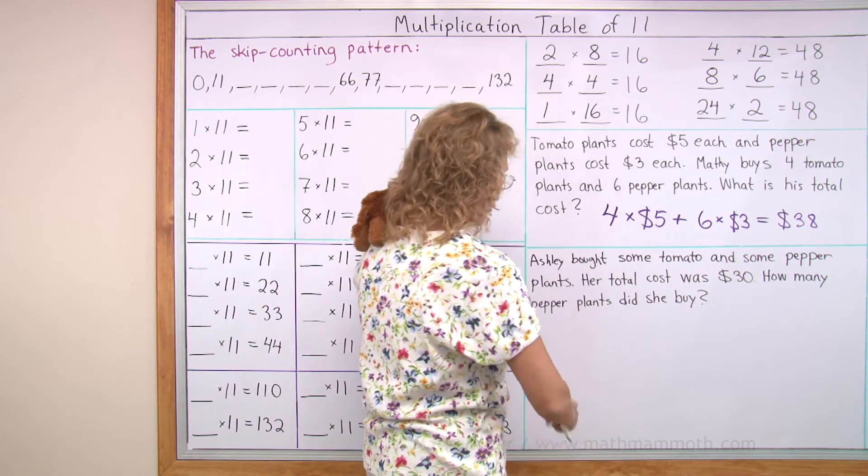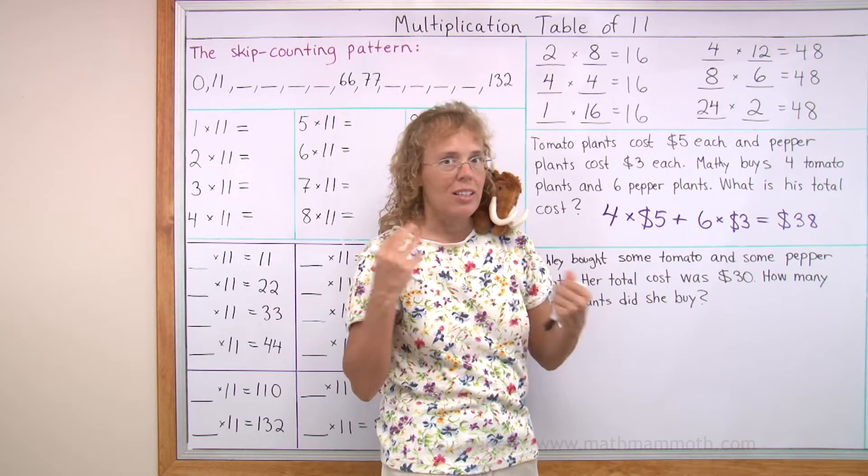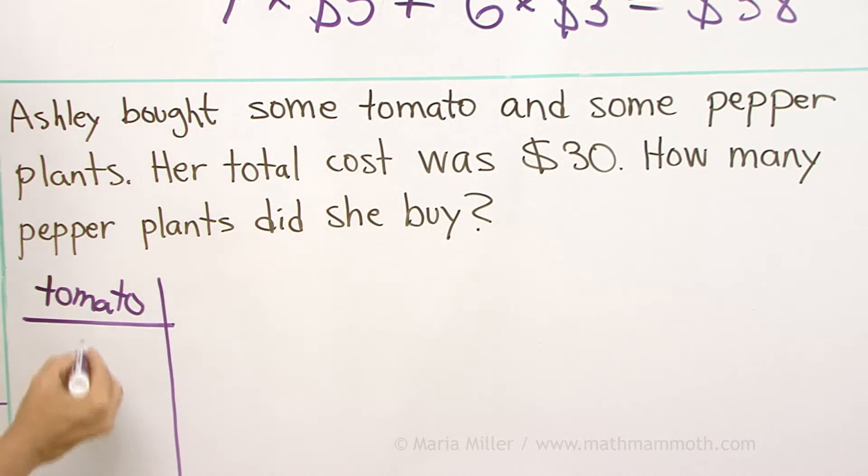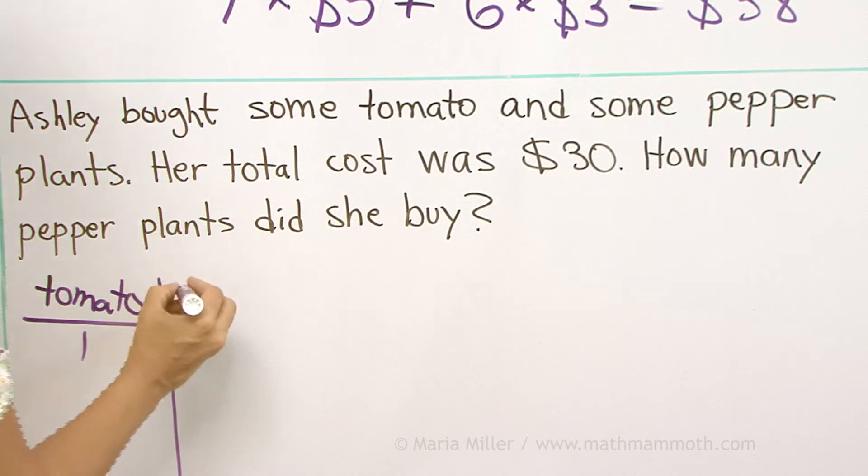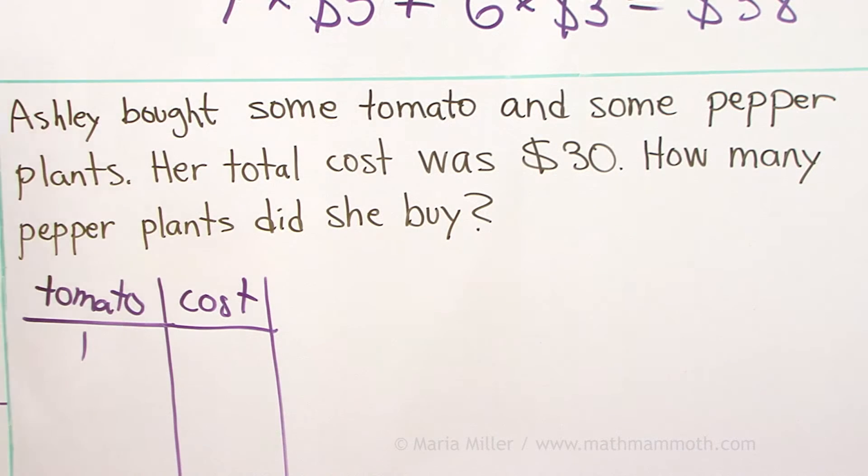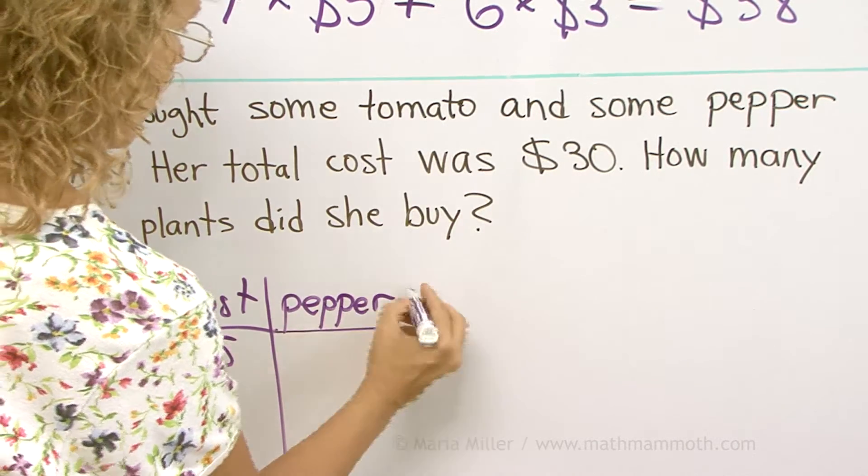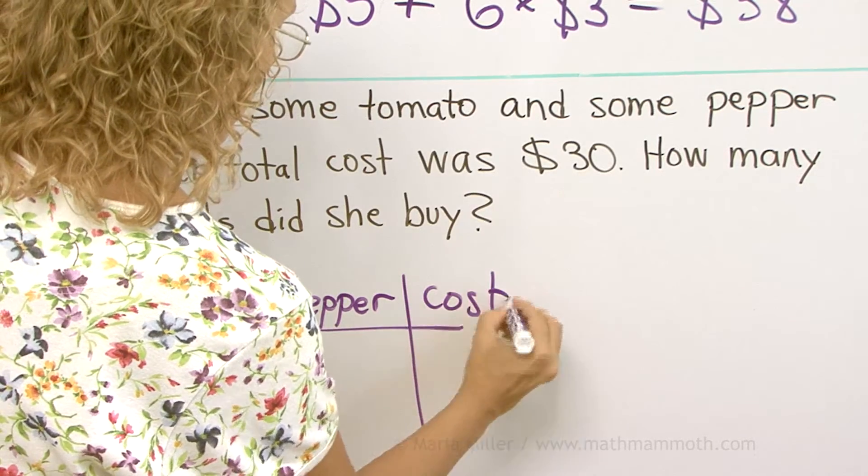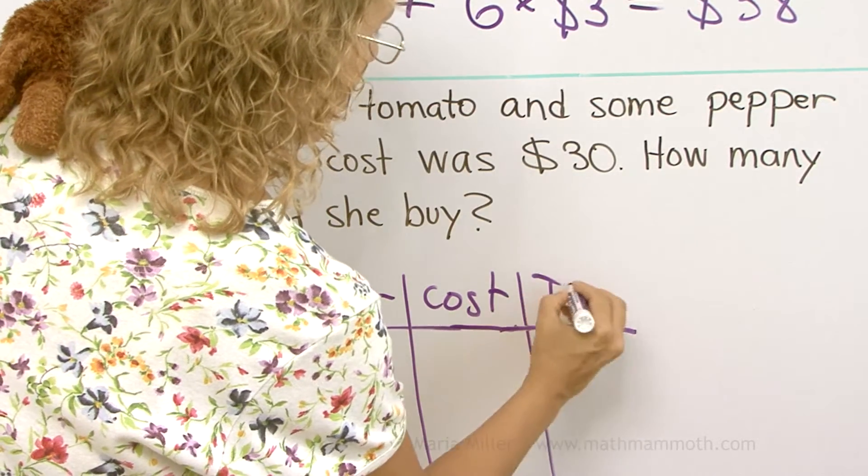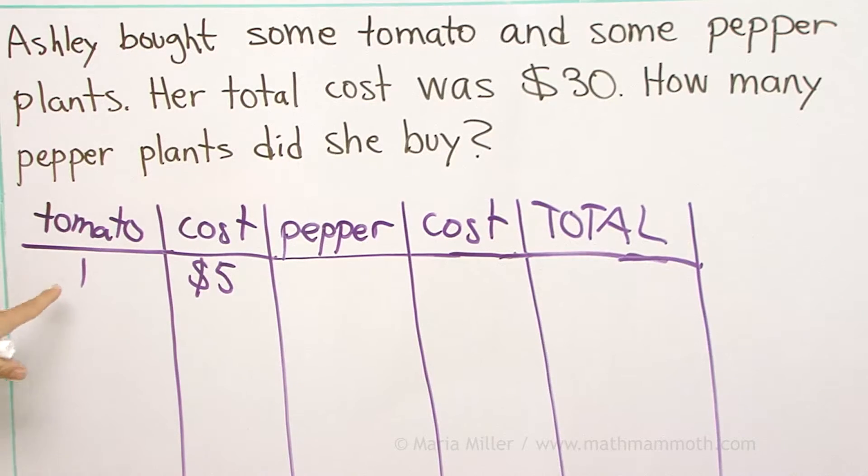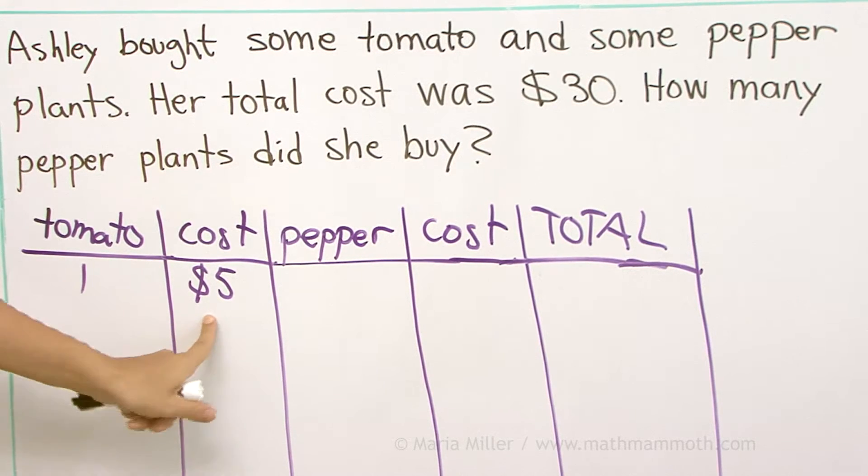Just make a guess, and since we're going to make many guesses, I'm going to write here a table to help organize our thoughts. Let's put here the tomato plants, and let's say if she would buy one tomato plant, then the cost for one tomato plant is $5. And then the pepper plants and the cost of pepper plants, then over here the total. You see the idea?